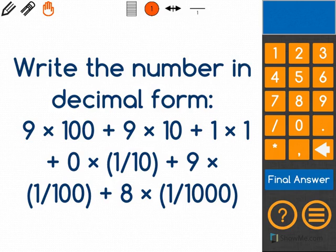The math problem says write the number in decimal form: 9 times 100 plus 9 times 10 plus 1 times 1 plus 0 times 1 tenth plus 9 times 1 one-hundredth plus 8 times 1 one-thousandth.